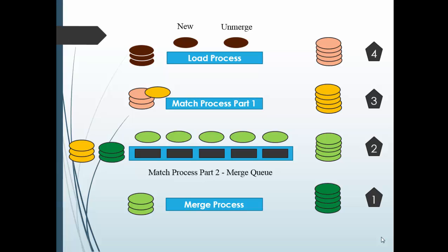Let's look at the pictorial view where multiple processes are involved. There are basically three processes: load process, match process, and merge process. The match process is divided into two parts — match process part one and match process part two. There is also a merge queue where the records get queued. Before loading data into a base object table, data is present in the stage table. When you start the load process, the record gets pushed from the staging table into the base object table.